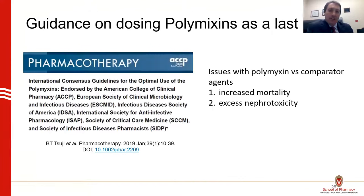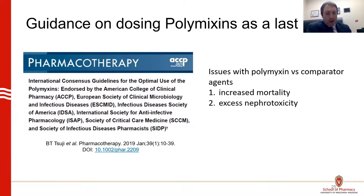Regarding polymixins, a separate 2019 guidance document is available covering dosing protocols and considerations for colistin (polymyxin E) and polymyxin B. Polymixins have been knocked down the treatment list because we now have better, less toxic agents. Compared to beta-lactam-derived comparators in studies, polymixins have shown increased mortality and excess nephrotoxicity, which are key reasons for their deprioritization as available treatment options.